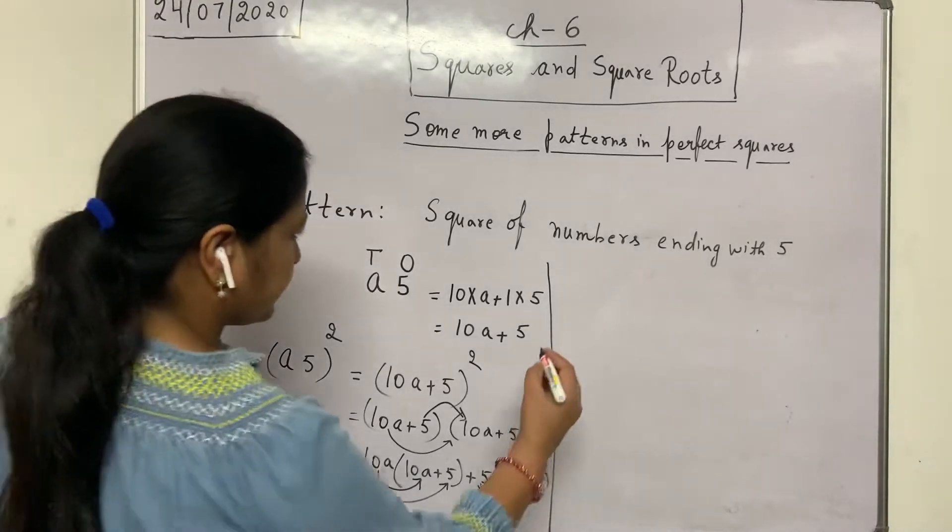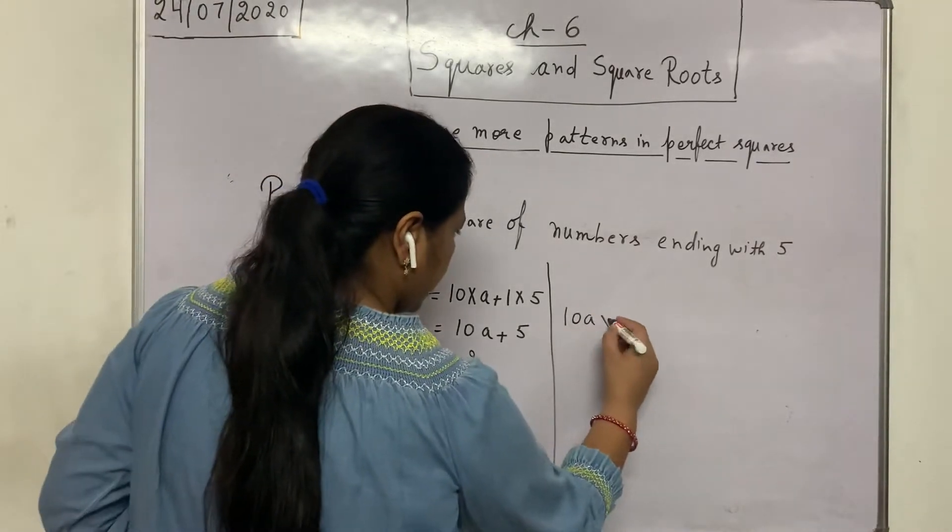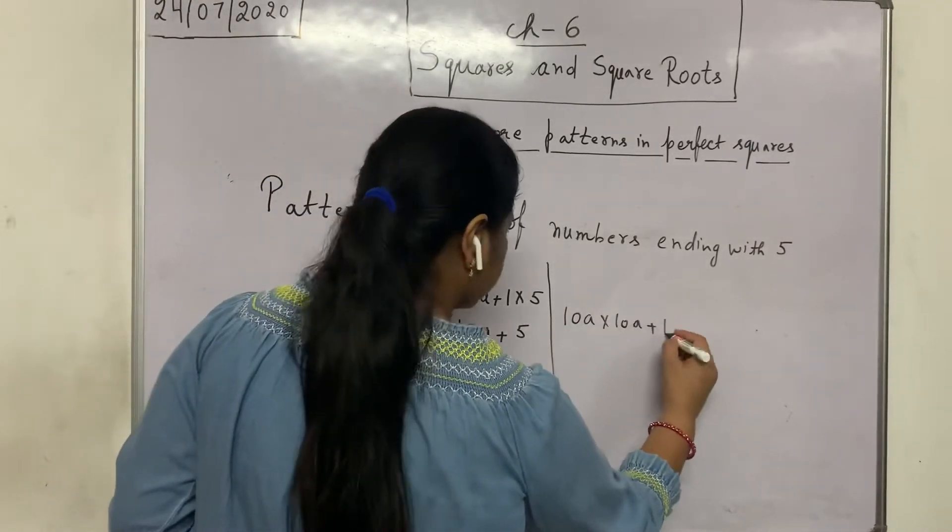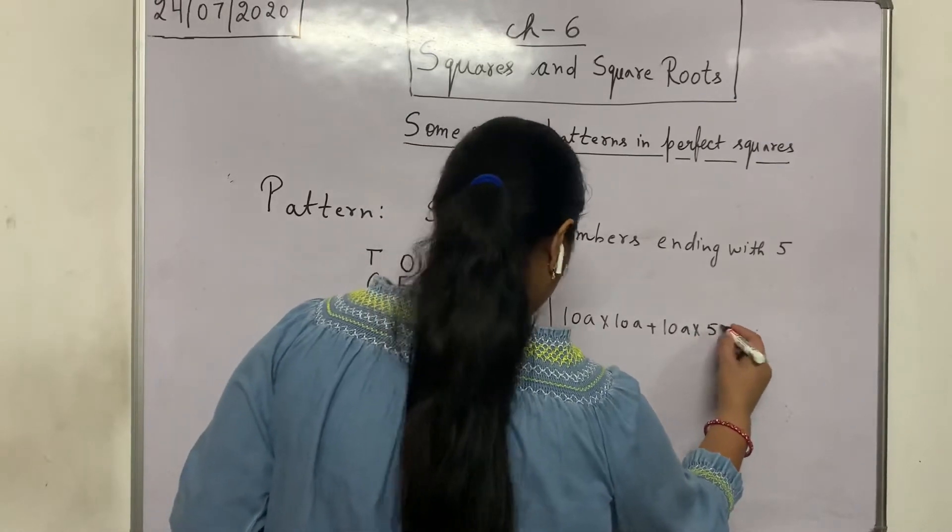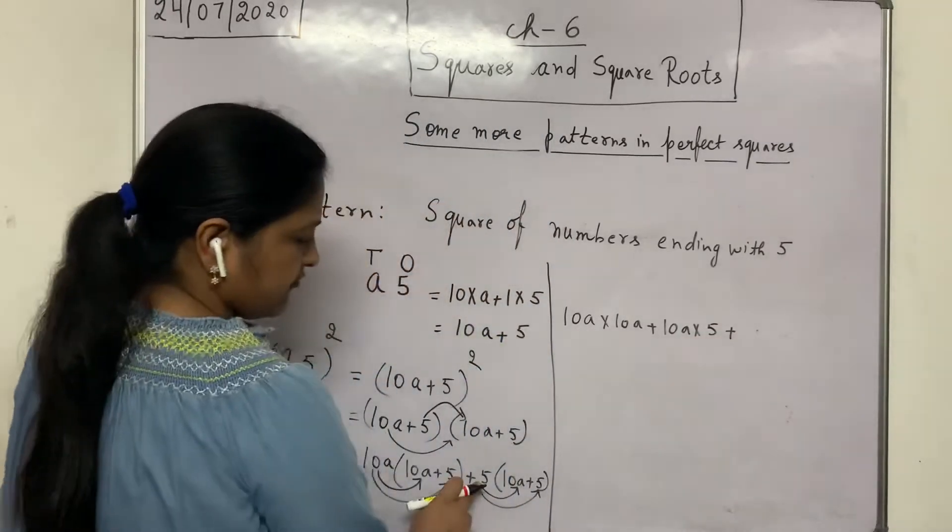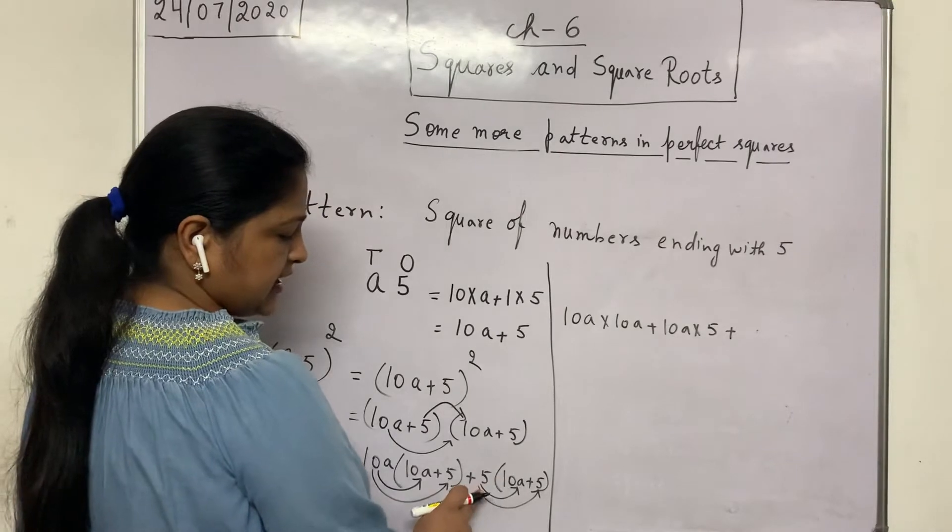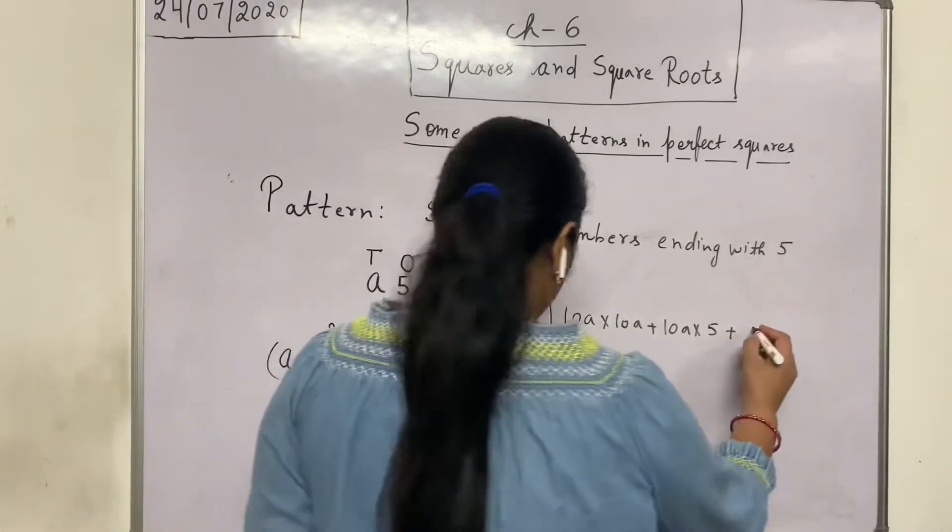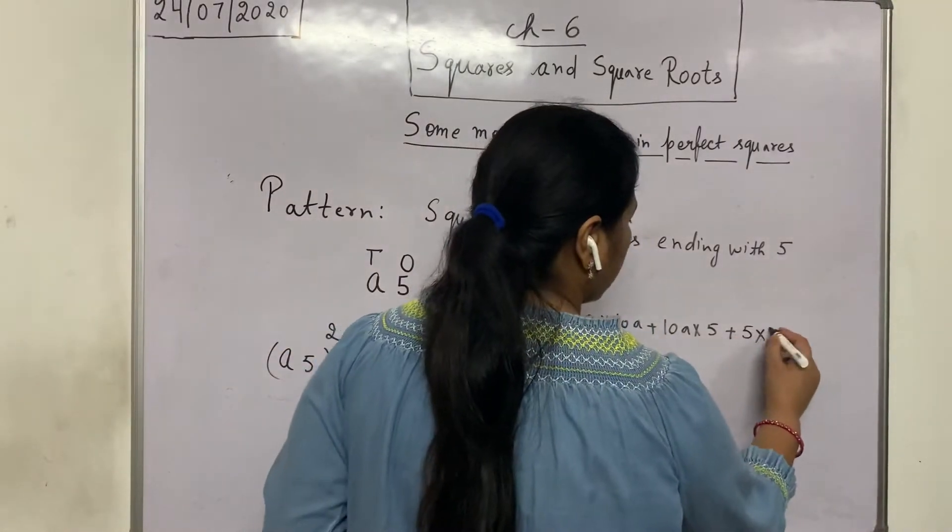It will be 10a into 10a plus 10a into 5 plus 5 into 10a plus 5 into 5. I will get the 4 terms.